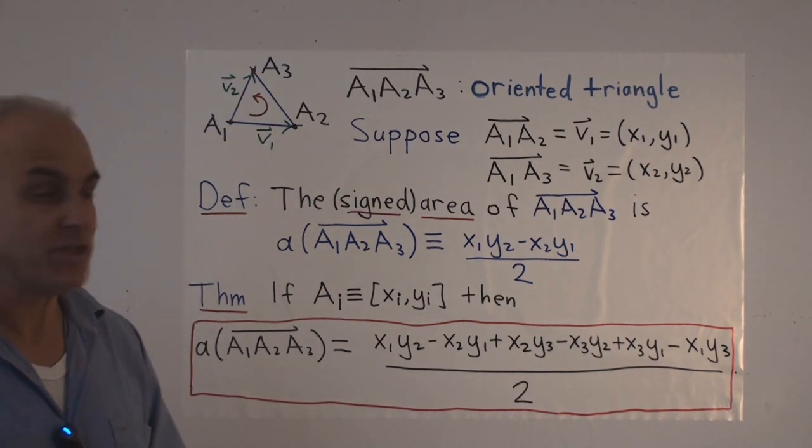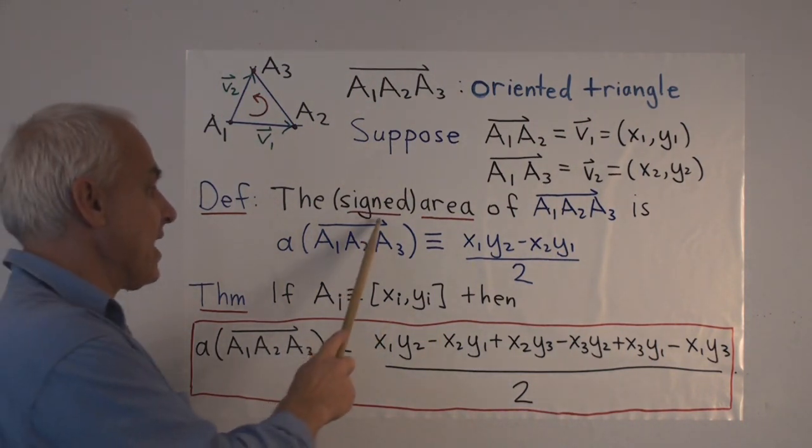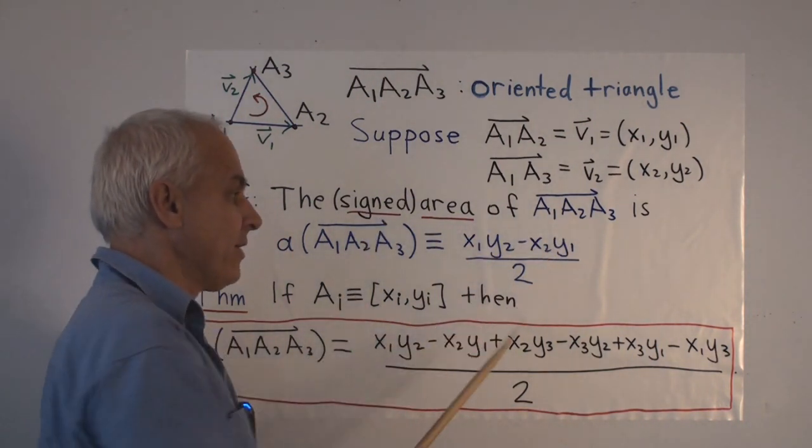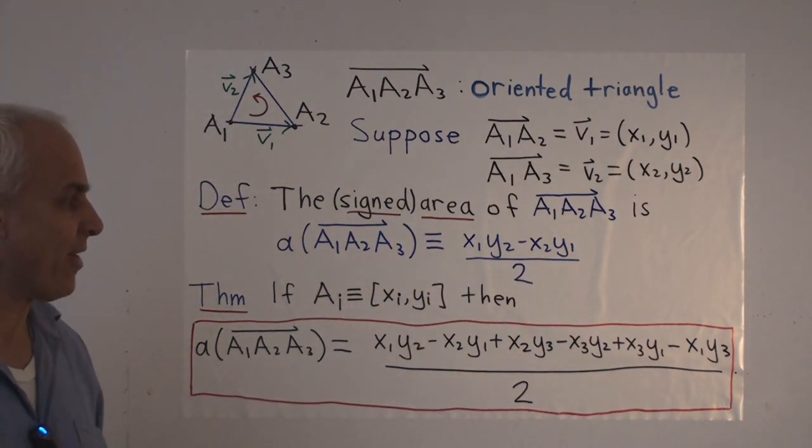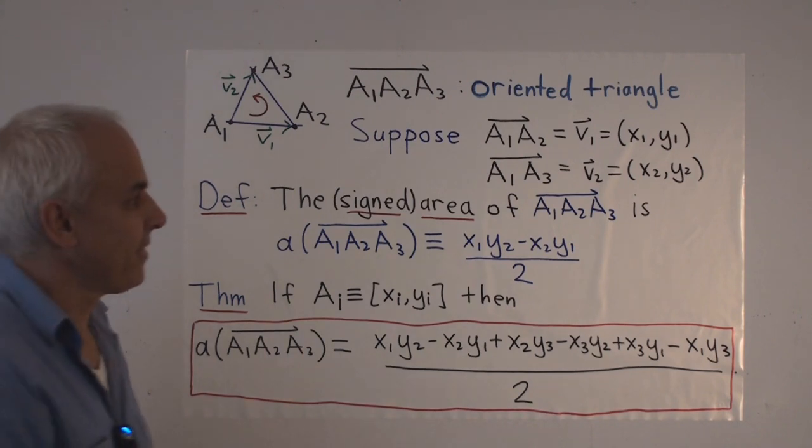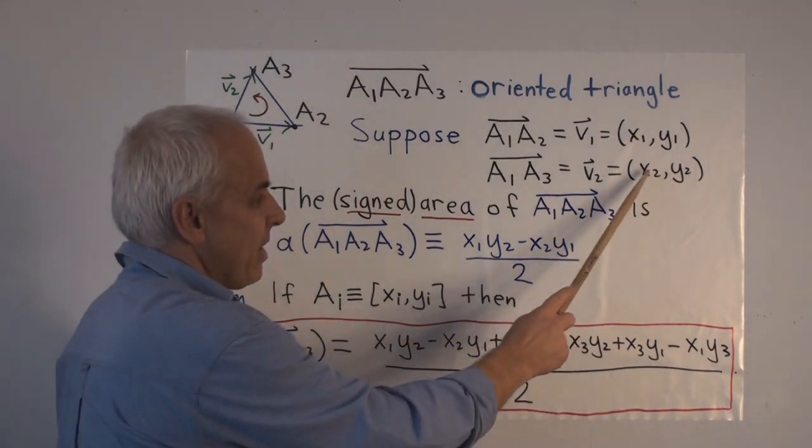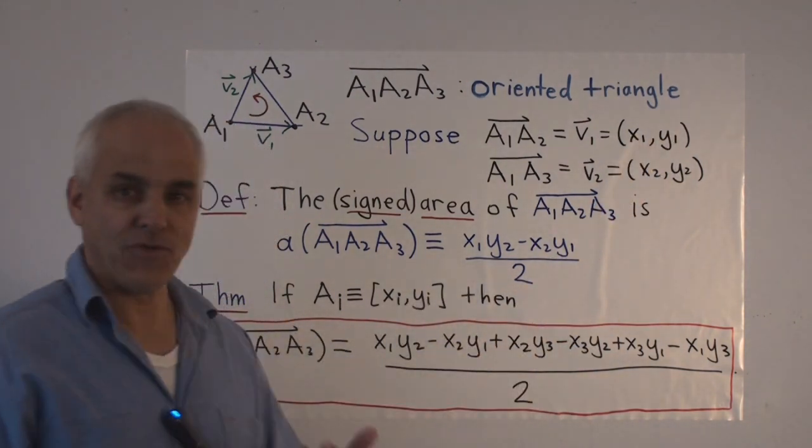Then in terms of those numbers, the signed area of the oriented triangle is defined to be this number here. It's X1, Y2, minus X2, Y1, over 2. This times this, minus this times this, all over 2.